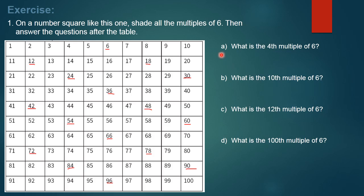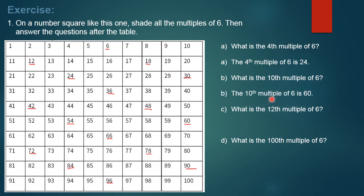Option A: what is the fourth multiple of six? From the square, counting 1, 2, 3, 4 — the fourth multiple of six is 24. You can also find it by multiplying 4 by 6, which gives 24. Option B: what is the tenth multiple of six? Ten multiplied by six gives 60. The tenth multiple of six is 60 — you can find it from the square or by multiplying.